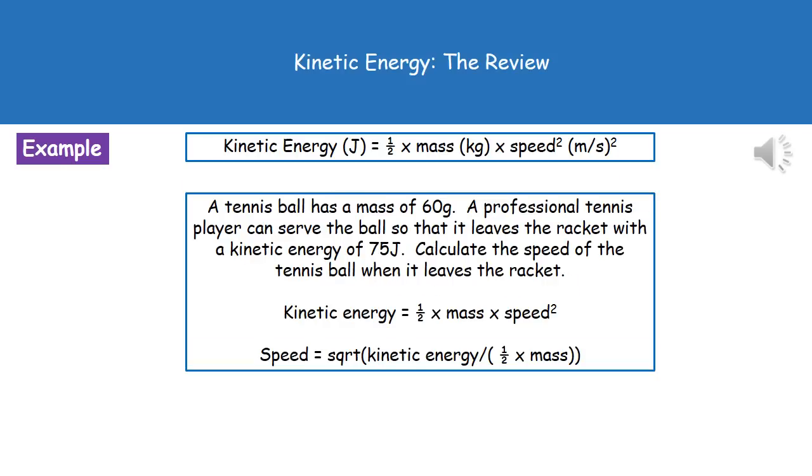On the higher tier paper, you might have a slightly more complex calculation to do here. The question you might get is, a tennis ball has a mass of 60 grams. A professional tennis player can serve the ball so that it leaves the racket with a kinetic energy of 75 joules. Calculate the speed of the tennis ball when it leaves the racket.